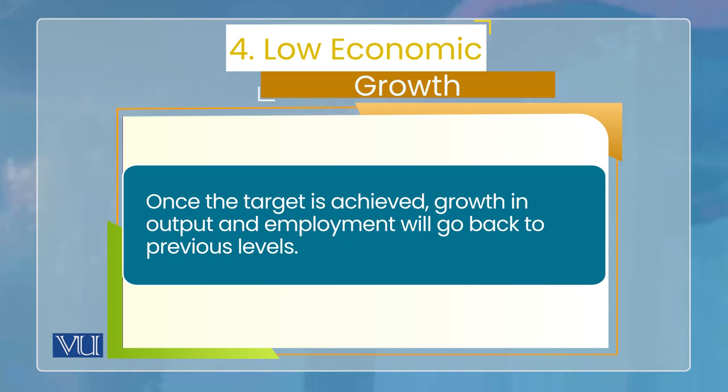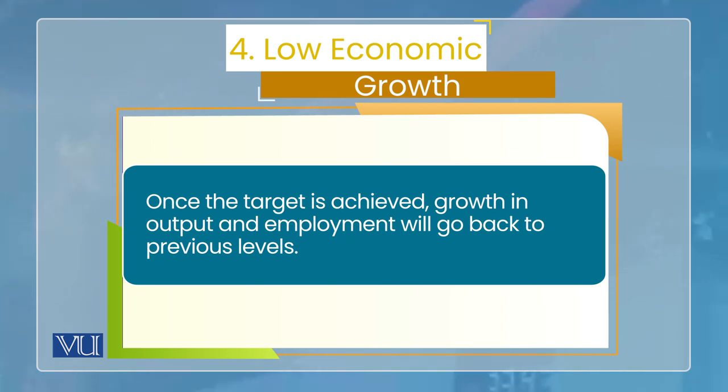دوسرا اہم پوائنٹ یہ ہے کہ ہم کہتے ہیں کہ پاکستان جیسی ڈیولپنگ کنٹری کے لیے گروتھ بڑی ایمپارٹنٹ ہے — انفلیشن کنٹرول کرنا ہے لیکن گروتھ کی قربانی نہیں دے سکتے۔ لیکن ساتھ یہ بھی دیکھنا پڑے گا کہ کیا گروتھ صرف مانیٹری پالیسی سے اچیو ہو سکتی ہے؟ مانیٹری پالیسی شارٹ رن میں اکنامک ایکٹیویٹی کو بوسٹ دے سکتی ہے، لیکن لانگ رن میں گروتھ کا پوٹینشل سپلائی سائیڈ سے آتا ہے — ایجوکیشن، ہیلتھ، سکلز، ٹریننگ، اور ہیومن کیپیٹل سے۔ مانیٹری پالیسی سے لانگ رن کا گروتھ پوٹینشل چینج نہیں ہو سکتا۔